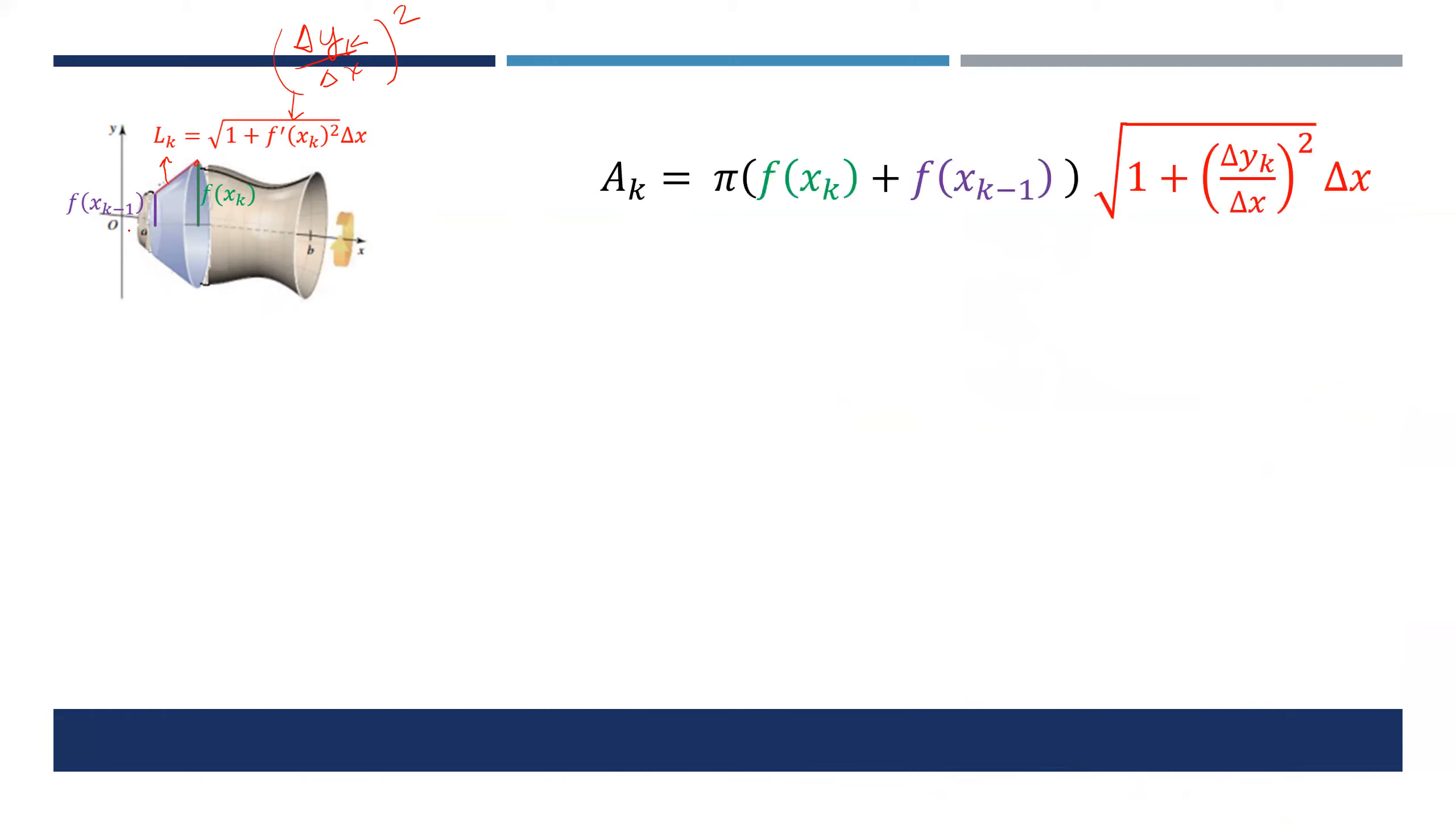The equation for the area would be: area of the frustum equals pi times big R plus little r multiplied by the length. Now what we will be doing is we are going to take that particular expression and sum it up from k equals 1 to n, meaning now we have n sections of this surface area adding them up.